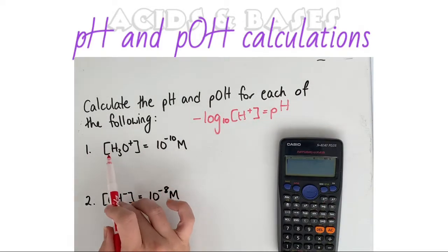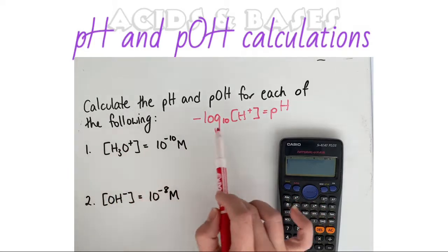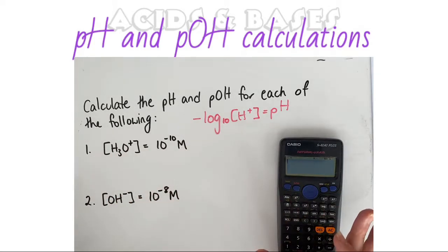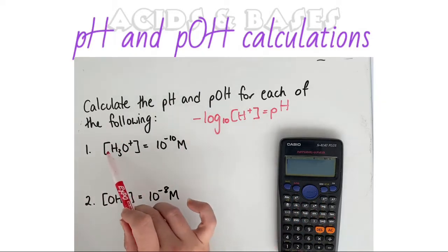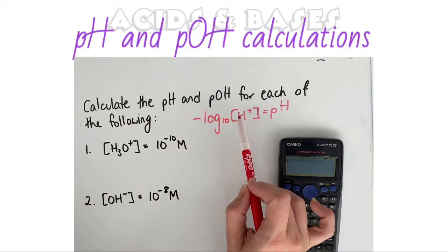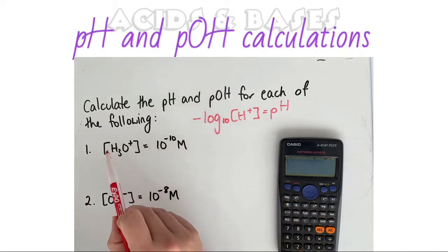Here we're given our H plus ions. You might see H3O plus and H plus used interchangeably and that's completely okay. This is just denoting that the H plus has been donated to the water molecule and that's where that hydrogen ion has ended up.